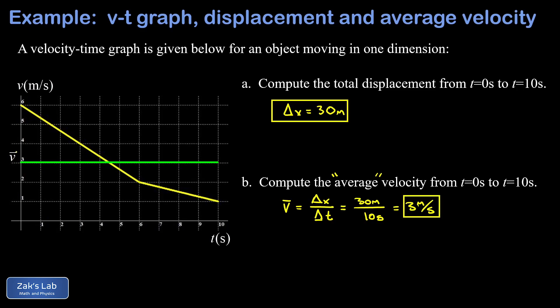If we look at the area bounded under v bar, this is just a big rectangle with a width of 10 seconds and a height of 3 meters per second, and we get our 30 meter displacement by moving at a constant rate.